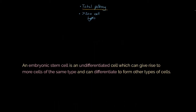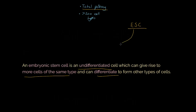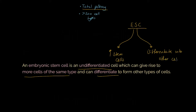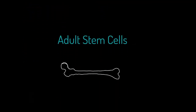Here's our definition: an embryonic stem cell is an undifferentiated cell which can give rise to more cells of the same type and can differentiate to form other cell types. The really important thing to draw out of that is that embryonic stem cells can do two things: they can produce more stem cells — they can reproduce — and they can differentiate into other cell types. That's what makes these stem cells super important to the development of a human being, or indeed any animal, or any plant, which we'll look at in a few moments.